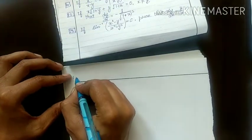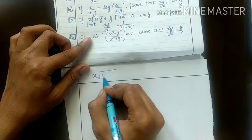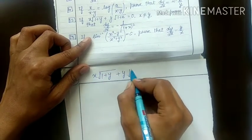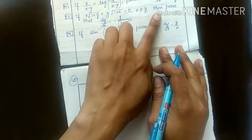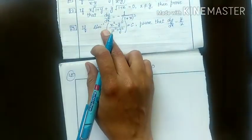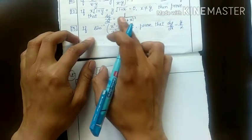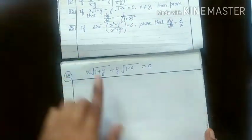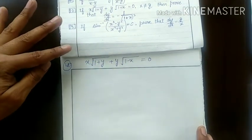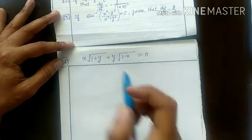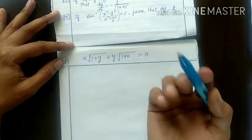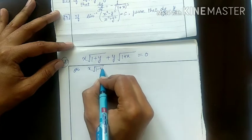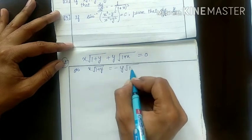Next is Example 12. Given: x under root 1 plus y plus y under root 1 minus x equals 0, and you have to prove dy by dx equals minus 1 upon (1 plus x) square. There are only 2 terms and both involve under root. You can differentiate directly, or use a second method: take x under root (1 plus y) equals minus y under root (1 plus x), then squaring both sides gives x square into 1 plus y equals y square into 1 plus x.